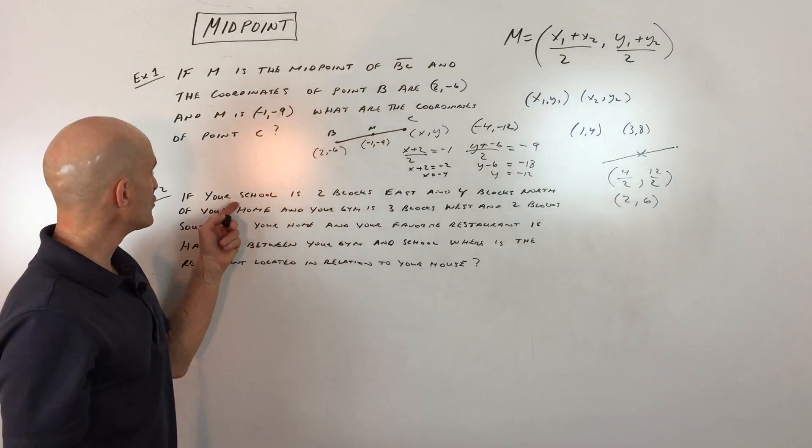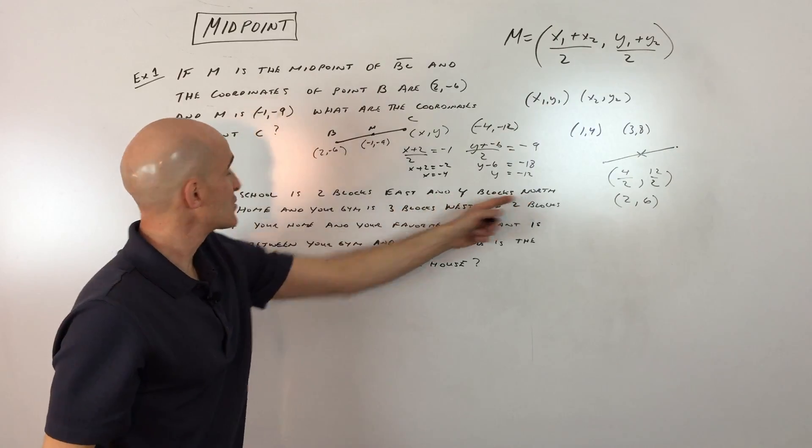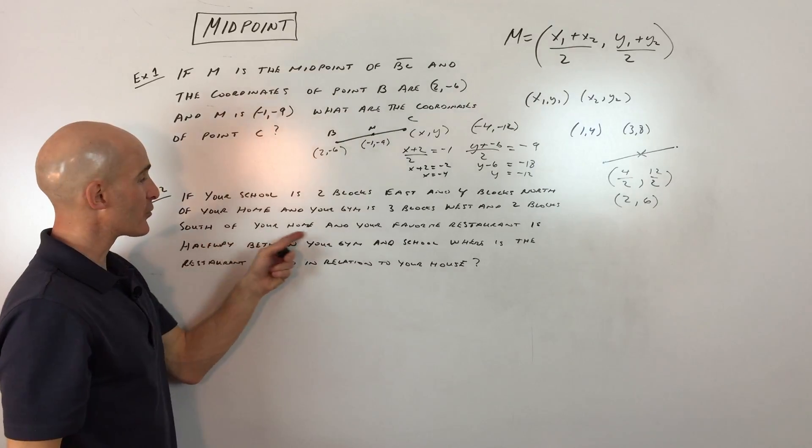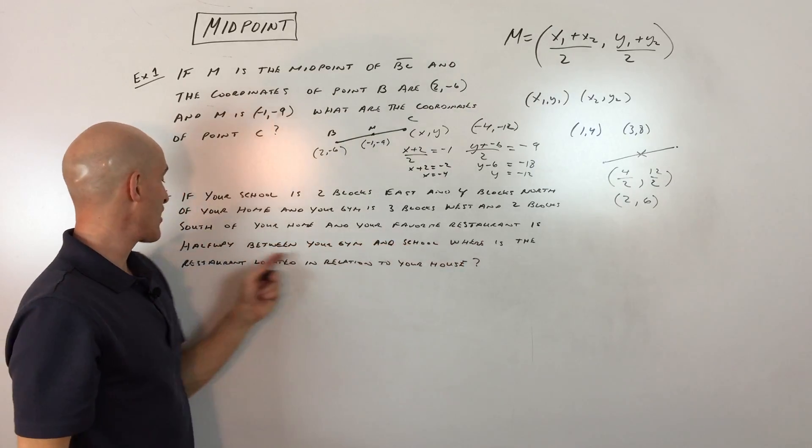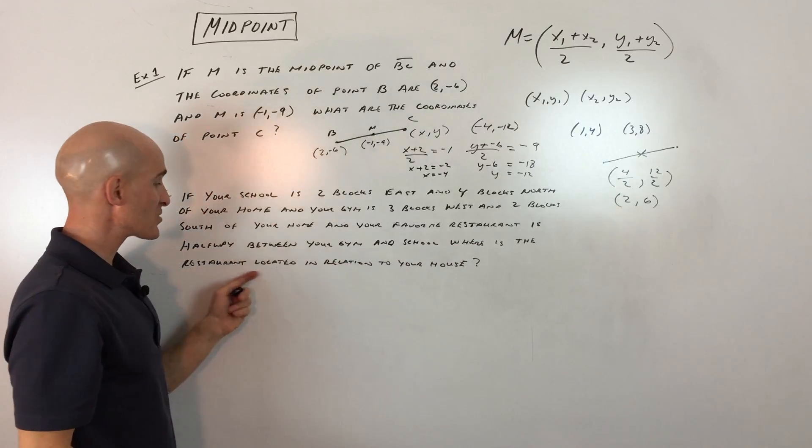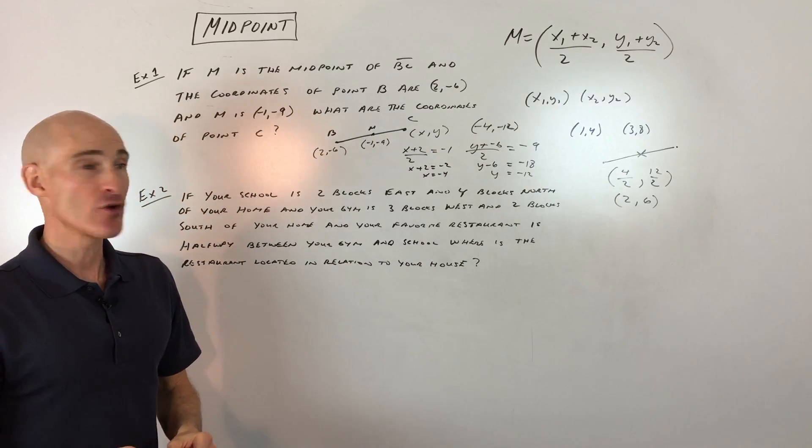Let's go to example number 2. If your school is 2 blocks east and 4 blocks north of your home, and your gym is 3 blocks west and 2 blocks south of your home, and your favorite restaurant is halfway between your gym and school, where is the restaurant located in relation to your house? See if you can do this problem on your own, and we'll do it together.